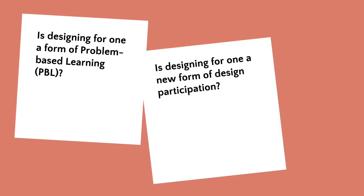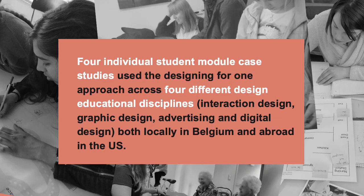For designing for one to be accepted as a new form of design participation, it can neither be fully placed within participatory design — in which a marginalized participant is accepted as a full design partner as a means to empower them — nor as co-design, in which a design is created through a collective process. Instead, designing for one requires participation but does not define what this participation must look like, other than to say that the relationship between designer and participant by nature influences a designer's choices.